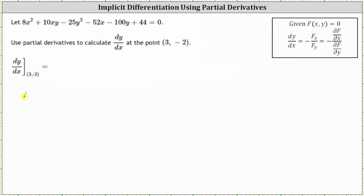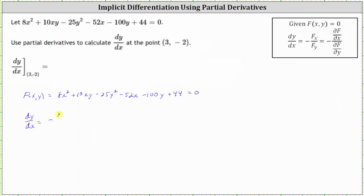To set this up, let's let F(x, y) equal 8x² + 10xy − 25y² − 52x − 100y + 44 = 0. Now we can find dy/dx, where dy/dx is equal to the opposite of the partial of F with respect to x, divided by the partial of F with respect to y.